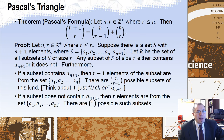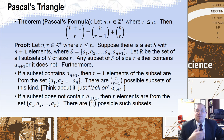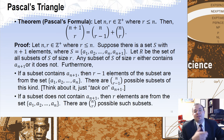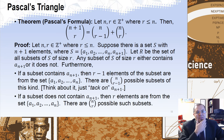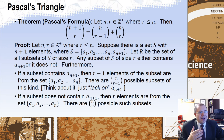This is what we call Pascal's Formula. If I give you two positive integers N and R where R is less than or equal to N, then N plus 1 choose R is equal to N choose R minus 1 plus N choose R. You can look at this almost like a recursive definition, because it's defined in terms of earlier entries in Pascal's Triangle.